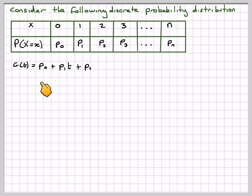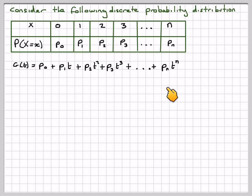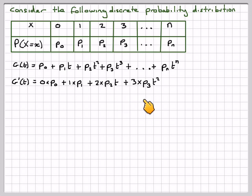G(T) = P0 + P1·T + P2·T² + P3·T³ + ... + Pn·Tⁿ. If you differentiate this, you get 0·P0 + 1·P1 + 2·P2·T + 3·P3·T² + ... + n·Pn·T^(n-1).